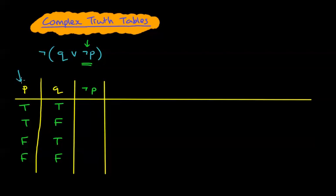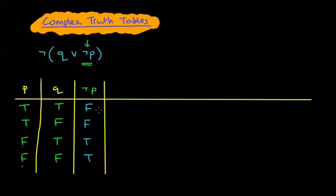Not P is the opposite of P. Look at the P column and write the opposite values: true becomes false, true becomes false, false becomes true, false becomes true. That gives us F, F, T, T for 'not P'. The negation is simply the opposite of something.